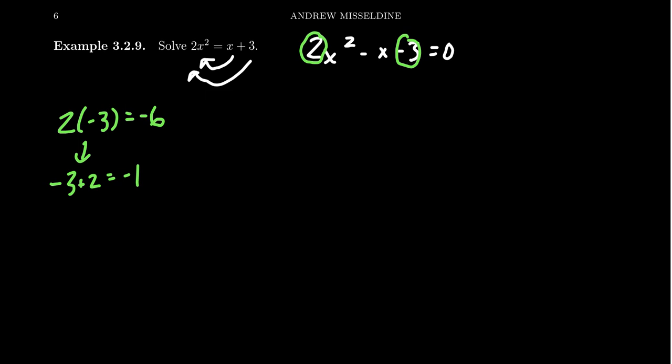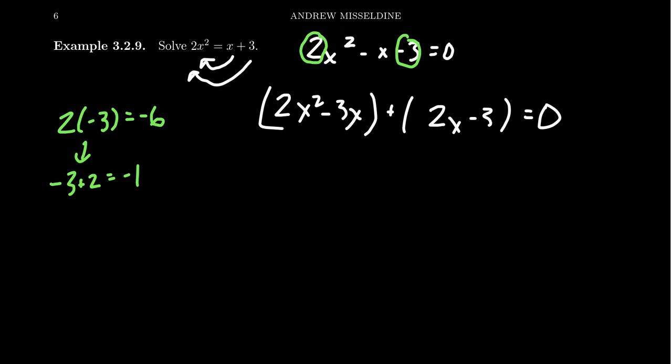So we're going to break the negative one up to be negative three x with a two x. You're going to get two x squared minus three x as the first group, and then the second group is going to be two x minus three. This is equal to zero. Sometimes people ask, which of the numbers do you put first? Should I do negative three and then two or two and then negative three? It turns out it doesn't matter — you'll get the correct factorization whichever way you put them. The intermediate steps will look a little bit different, but in the end you'll get the correct thing.